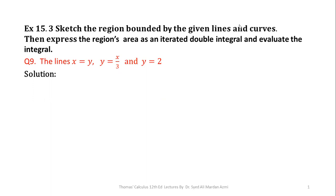The lines given in this question are x = y, y = x/3, and y = 2. In order to learn this concept, we must first know the formula for area through double integrals. The formula is: Area = double integral over the region R of dA, where dA is a small patch of that particular area.